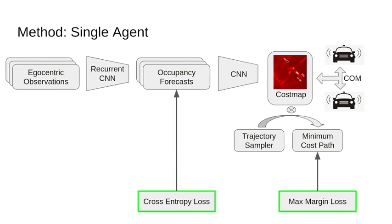To train this network, we use a cross-entropy loss for perception and a max margin loss for planning.